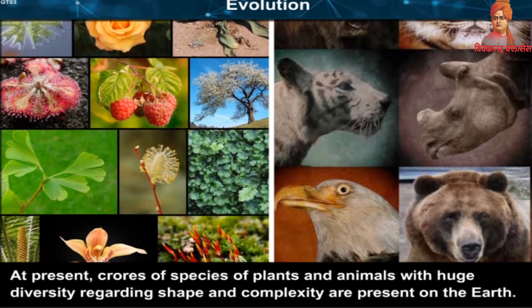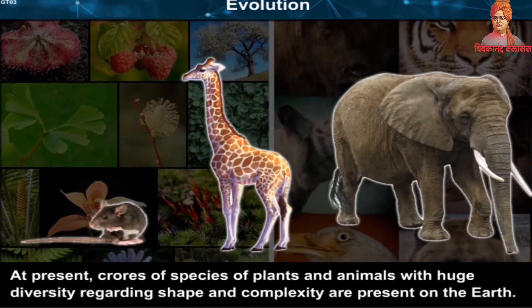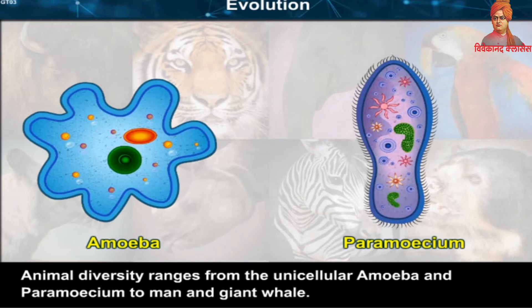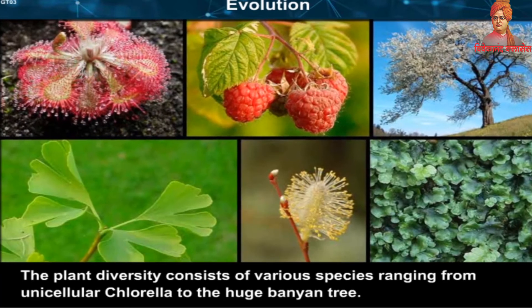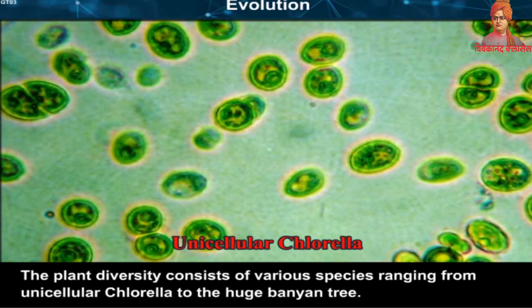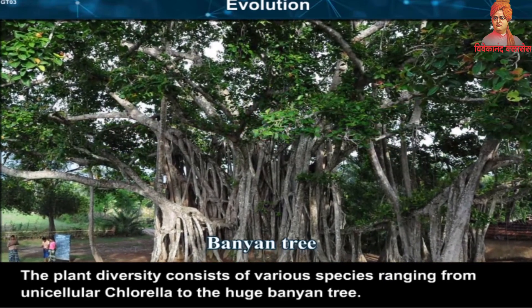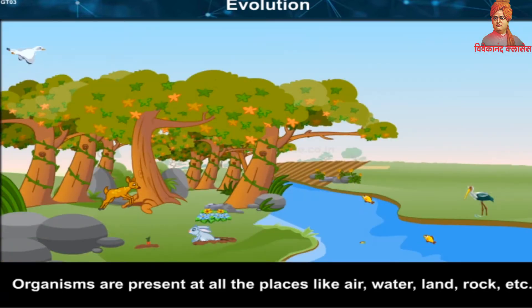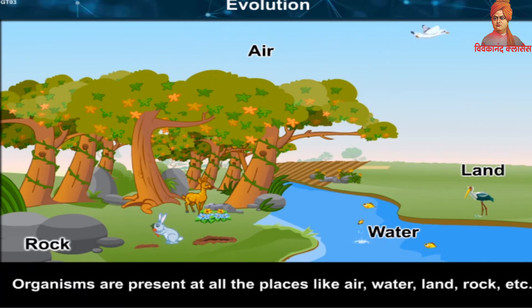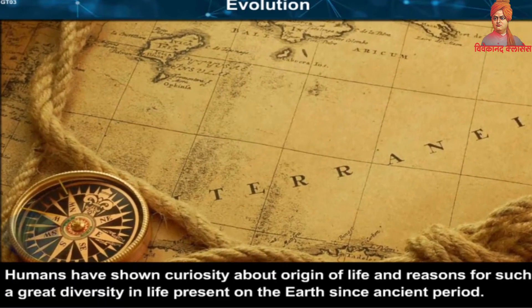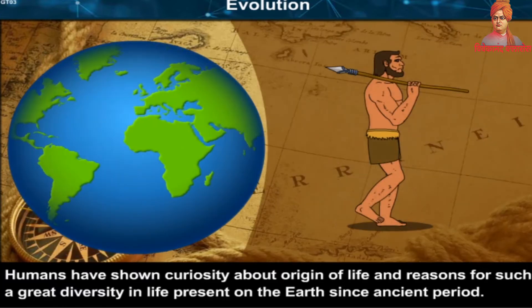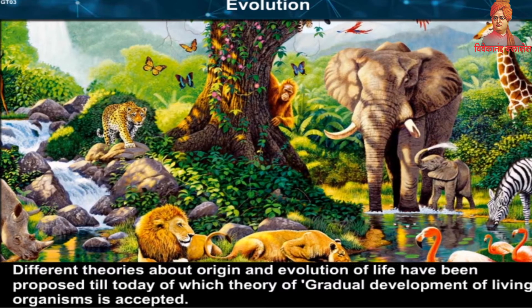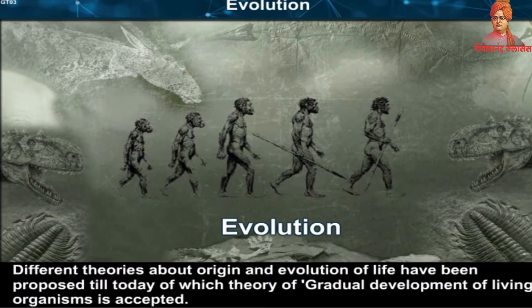At present, crores of species of plants and animals with huge diversity regarding shape and complexity are present on the earth. Animal diversity ranges from the unicellular amoeba and paramecium to man and giant whale. Plant diversity consists of various species ranging from unicellular chlorella to the huge banyan tree. Humans have shown curiosity about the origin of life since ancient times, and various theories about origin and evolution have been proposed, of which the theory of gradual development is accepted.